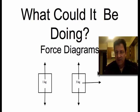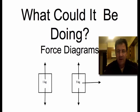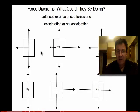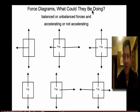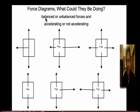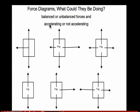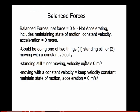So each of these things are objects with some mass and some forces being applied to them. Here are the diagrams we've talked about in class. These are Force Diagrams, and I titled this 'What Could They Be Doing?' because we don't really know. It's all based on whether the forces are balanced or unbalanced, and therefore whether they're accelerating or not accelerating — which means speeding up, slowing down, standing still, or moving with a constant velocity.